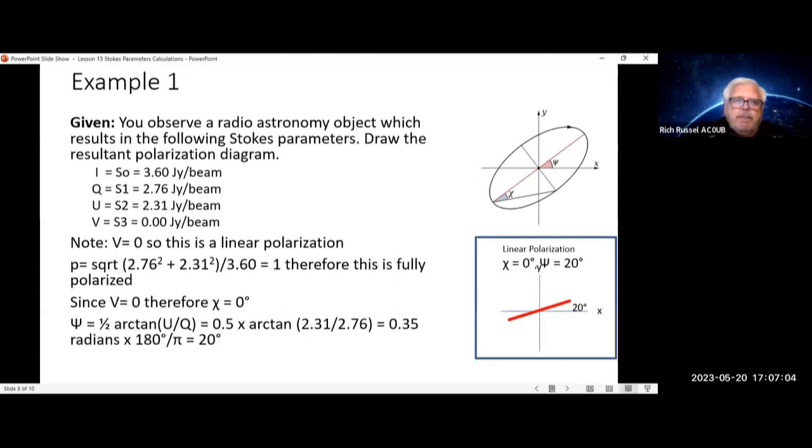Example 1. You observe a radio astronomy object which results in the following Stokes parameters. Draw the resultant polarization diagram.